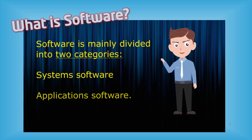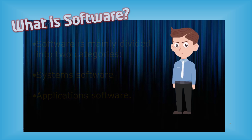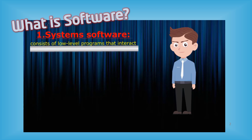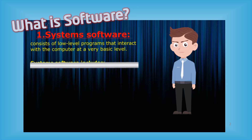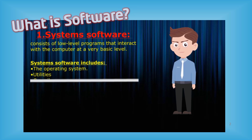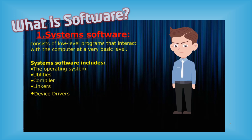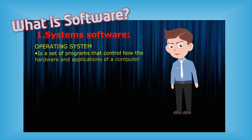Software is mainly divided into two categories: system software and application software. System software consists of low-level programs that interact with the computer at a very basic level. System software includes the operating system, utilities, compilers, linkers, and device drivers.